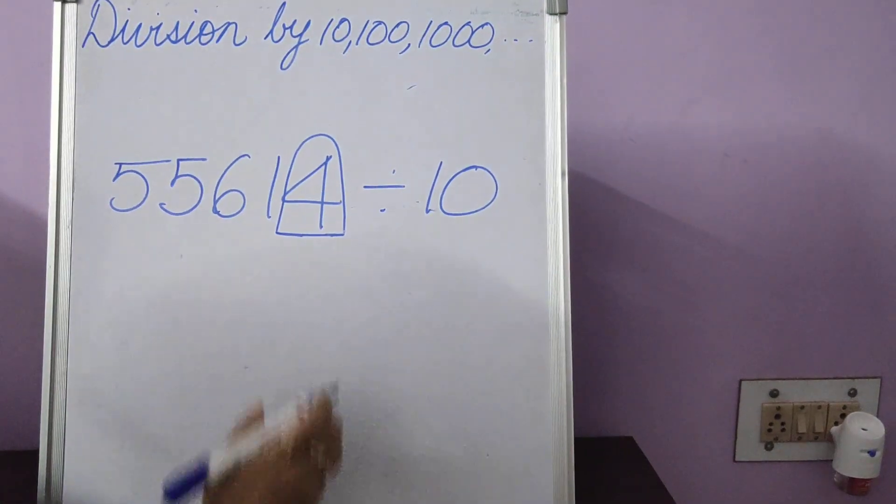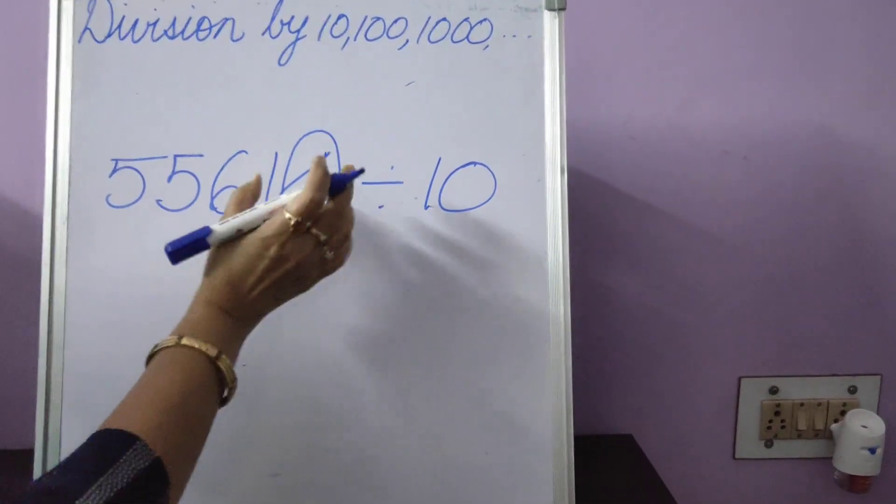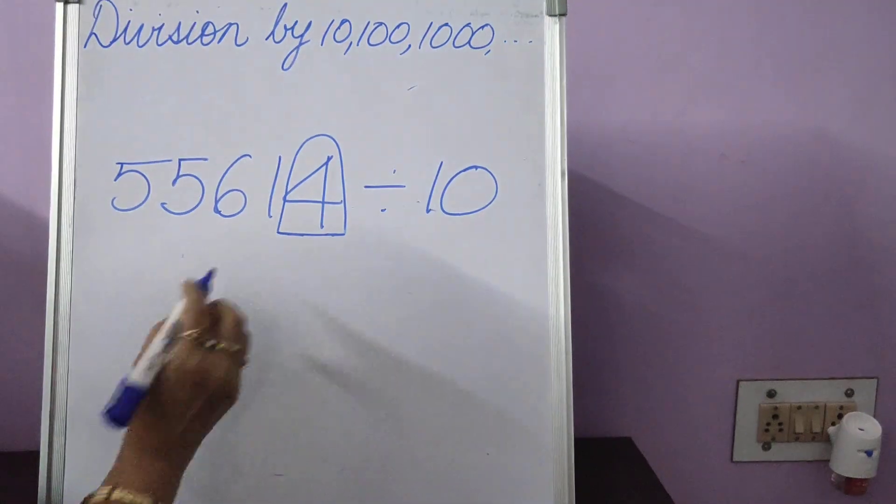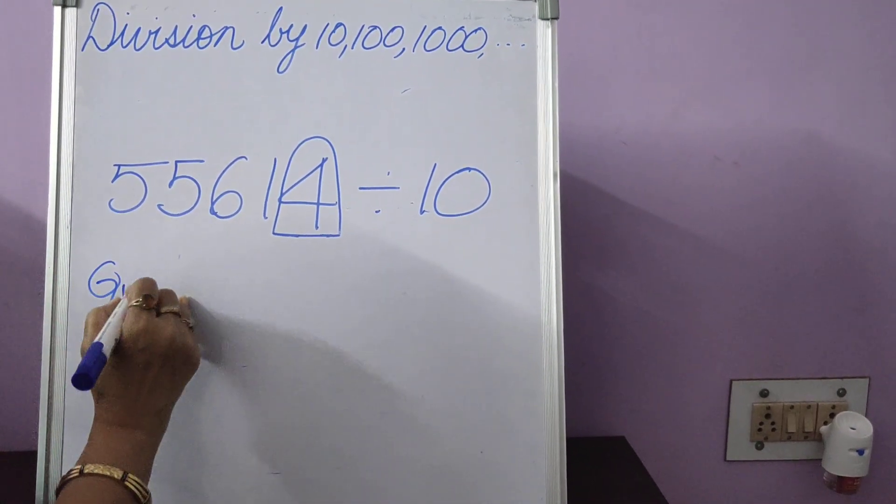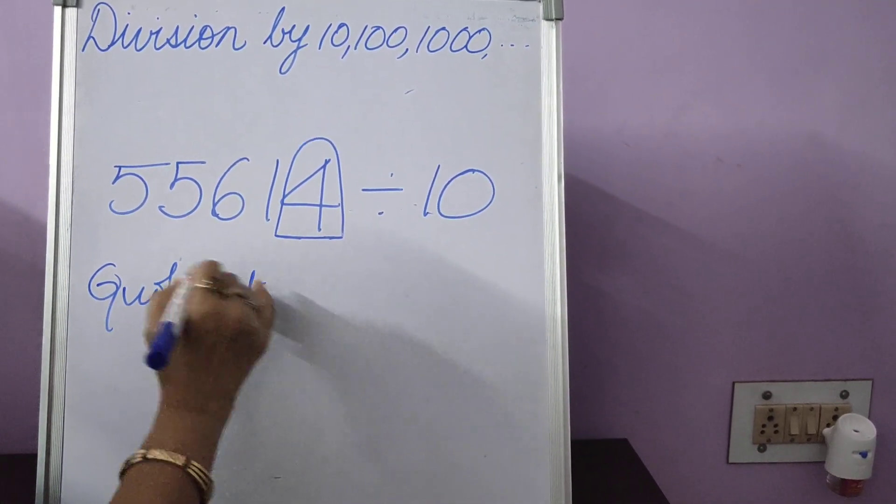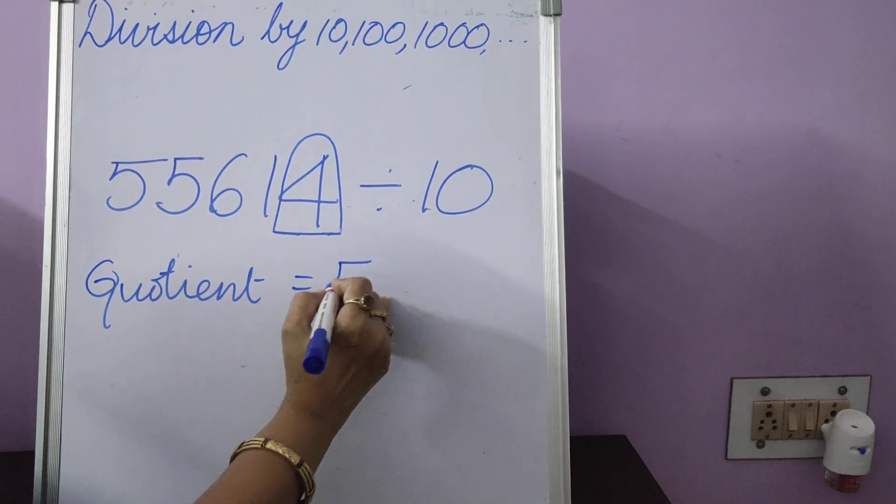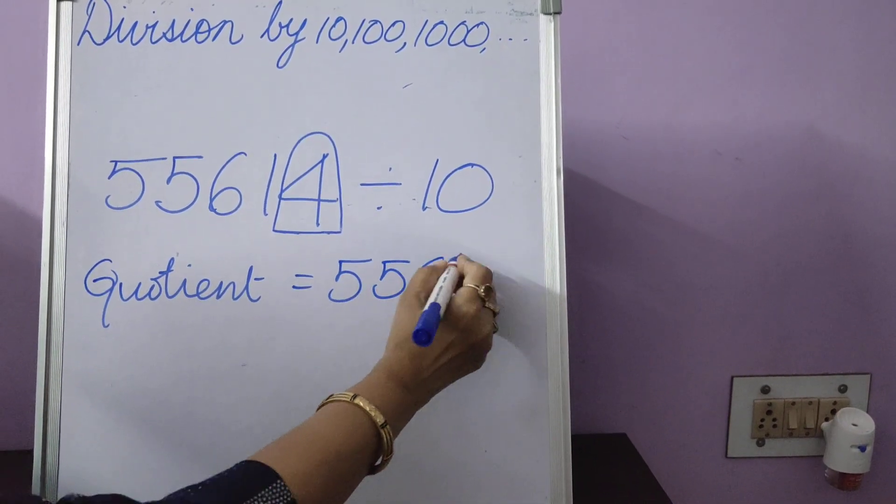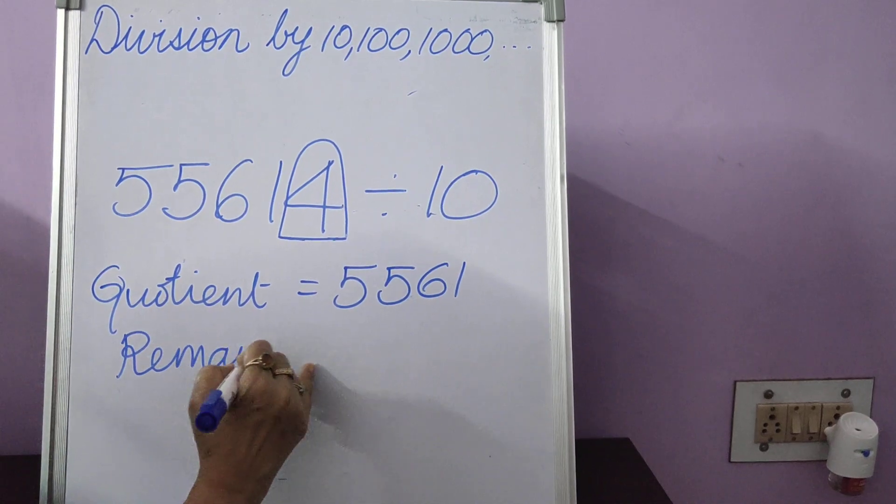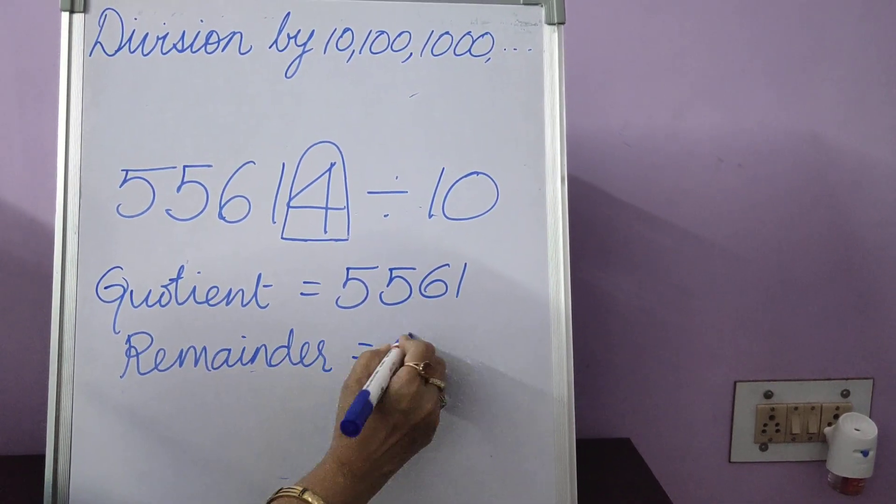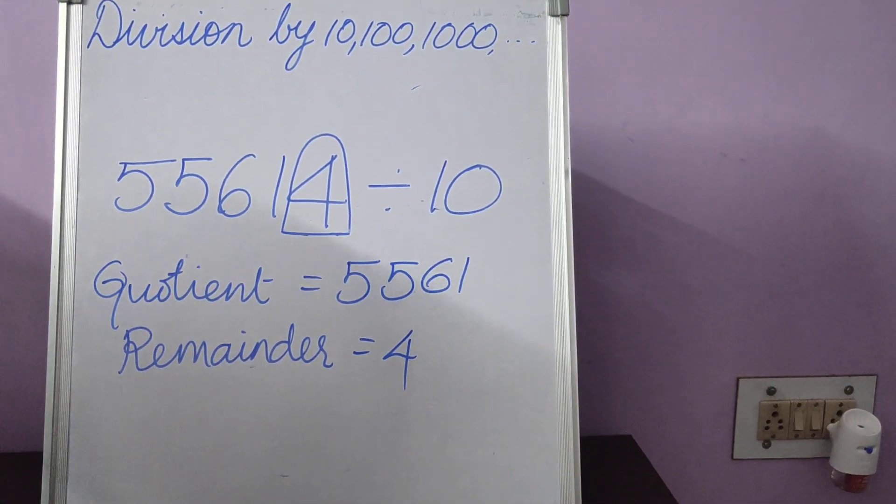When you do it in your notebook, please use a marker to draw this circle. It is not the proper shape of a circle, but we just call it a circle because we are putting this into this sort of shape. So what is your quotient? What is outside is your quotient, 5,561 and your remainder is 4. Easy. Same thing.